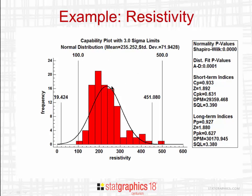The shorter vertical lines show the mean of the sample plus and minus three times the sample standard deviation. While the upper three sigma limit is within the spec, the lower three sigma limit is not.